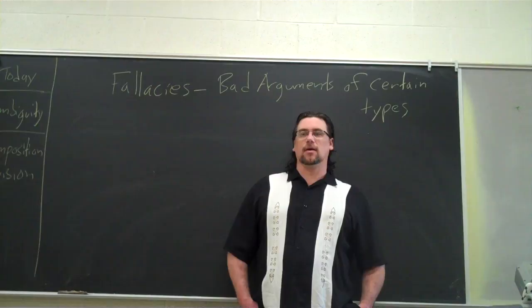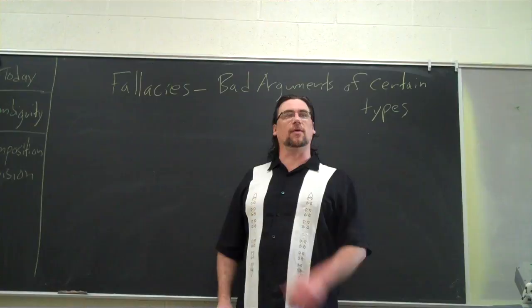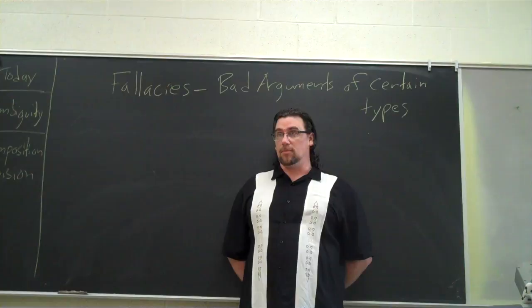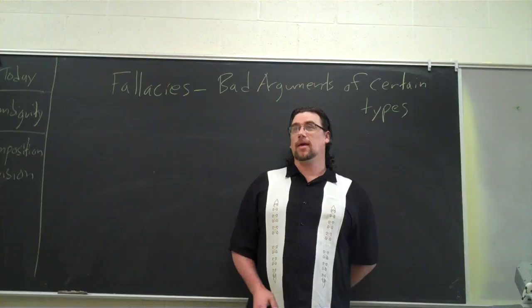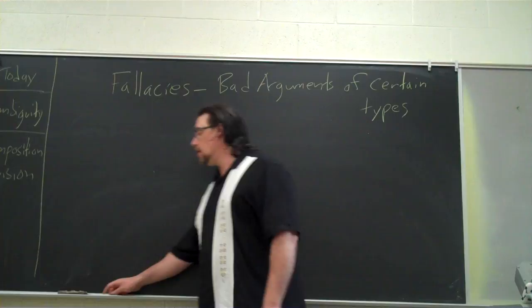The ones we're going to look at today — composition and division — are fallacies too. They are bad arguments with a certain type and a certain structure. I noticed a few of you have printed out the handout I created about composition and division. In that handout, besides giving you examples and explaining what they consist in, I give you some charts that help you wrap your mind around how the fallacy is structured as an argument.